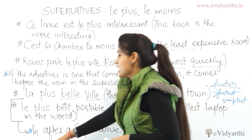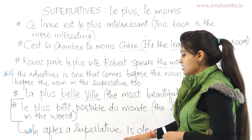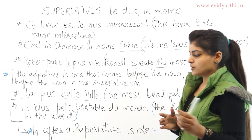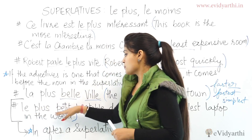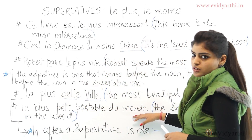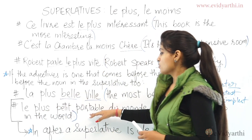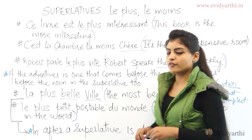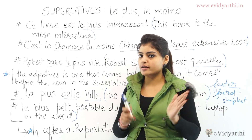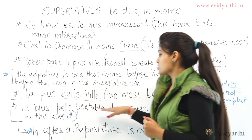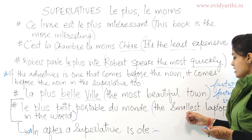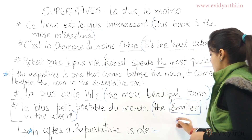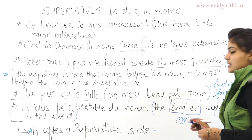After a superlative, we use 'de' meaning 'in'. For example: 'Le plus petit portable du monde' means the smallest laptop in the world. This corresponds to the English -est ending, like 'smallest'. 'Portable' means laptop and 'monde' means world.